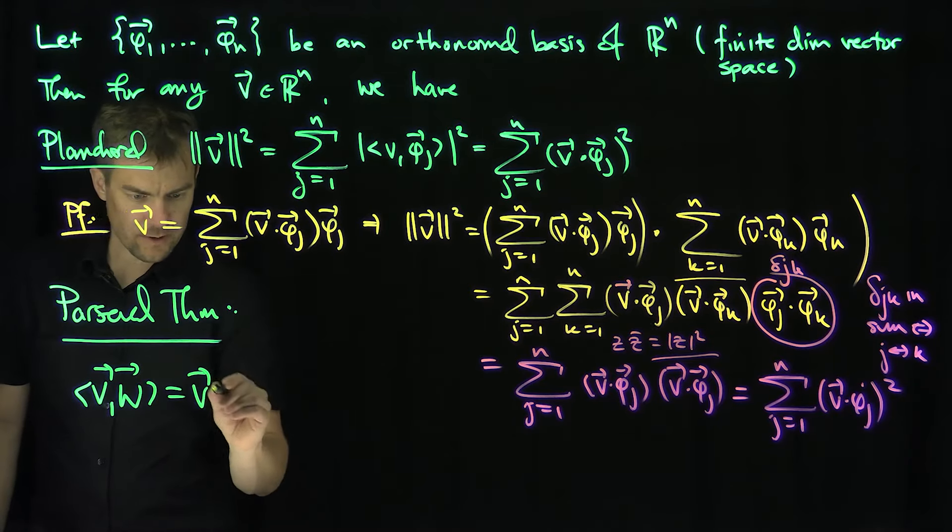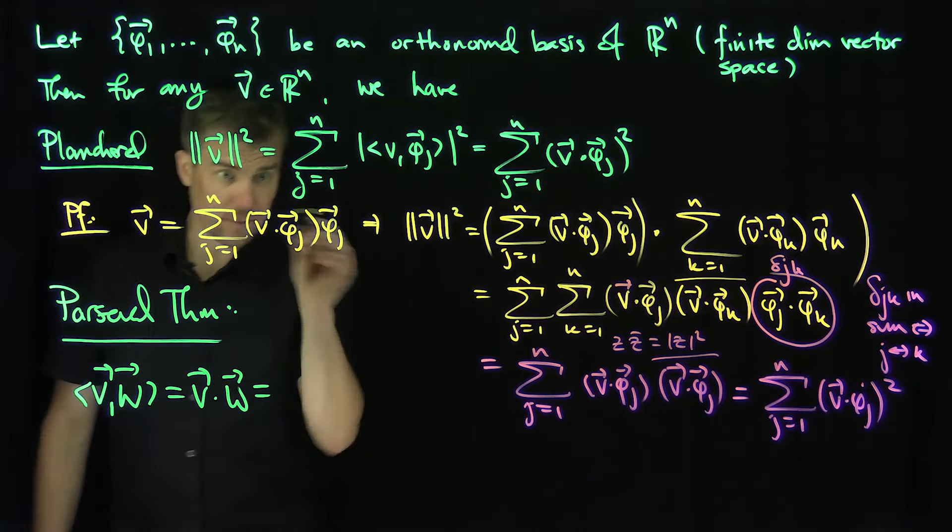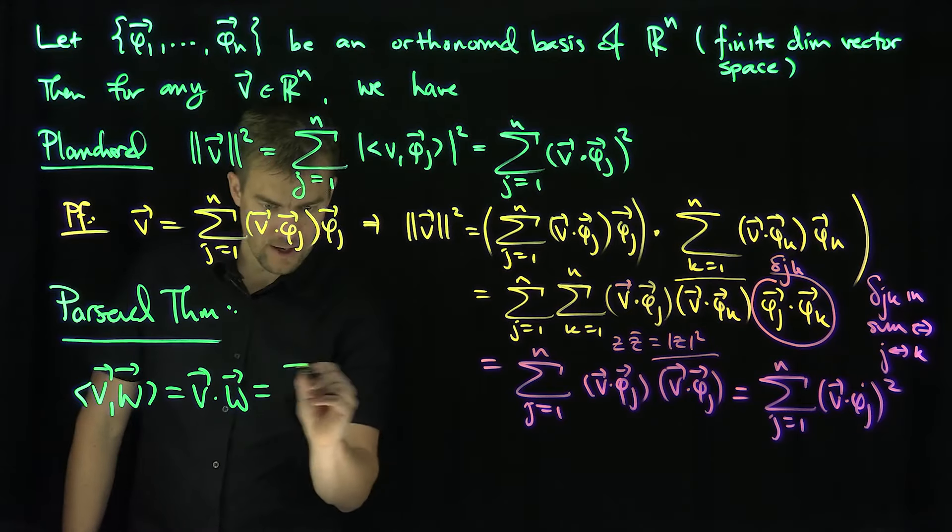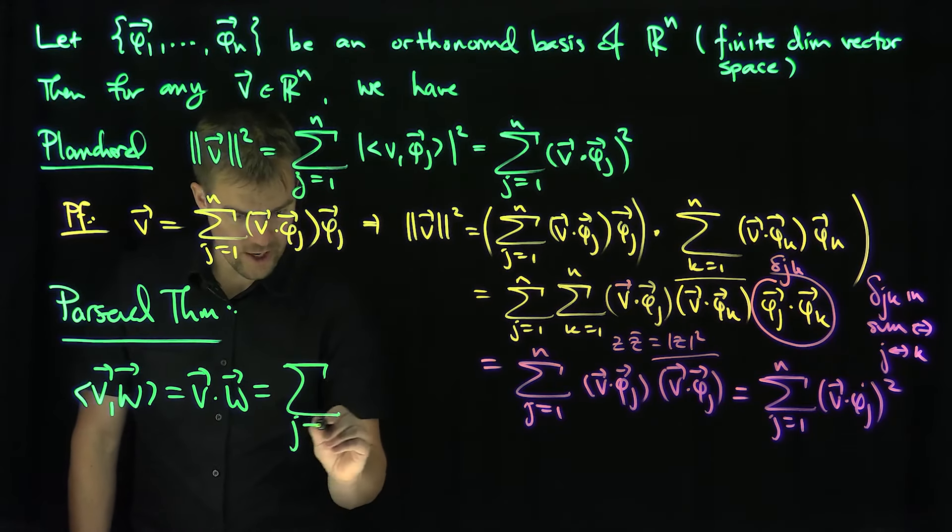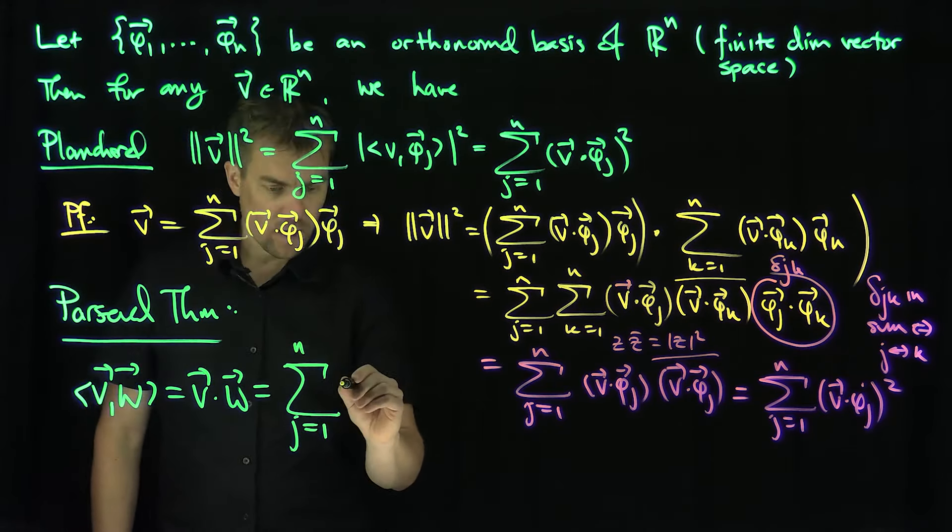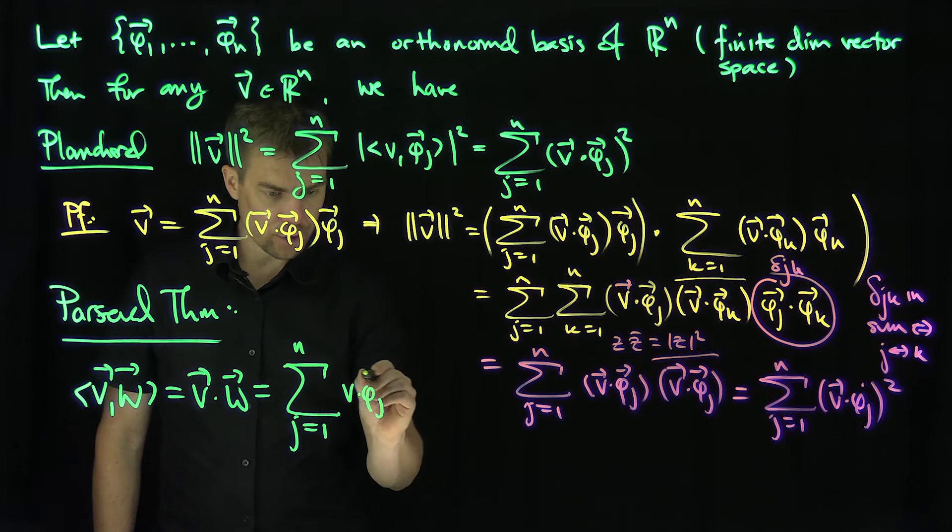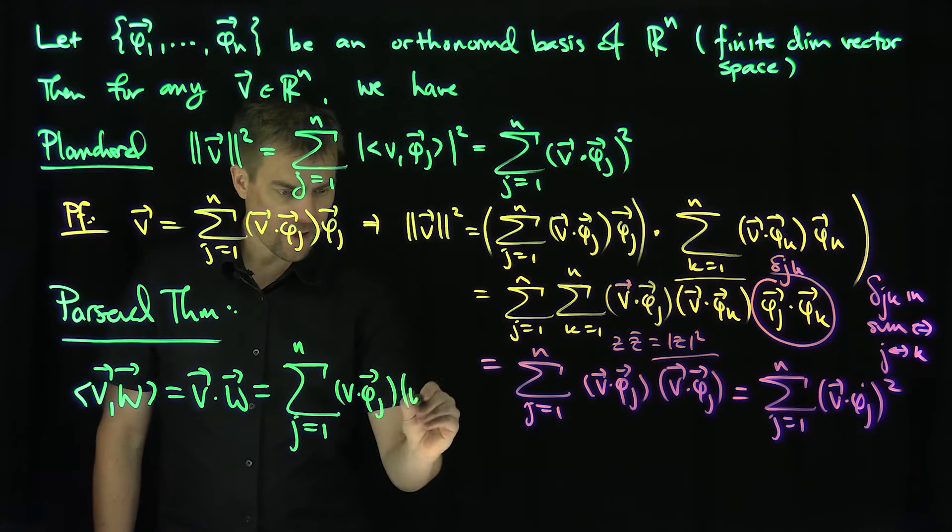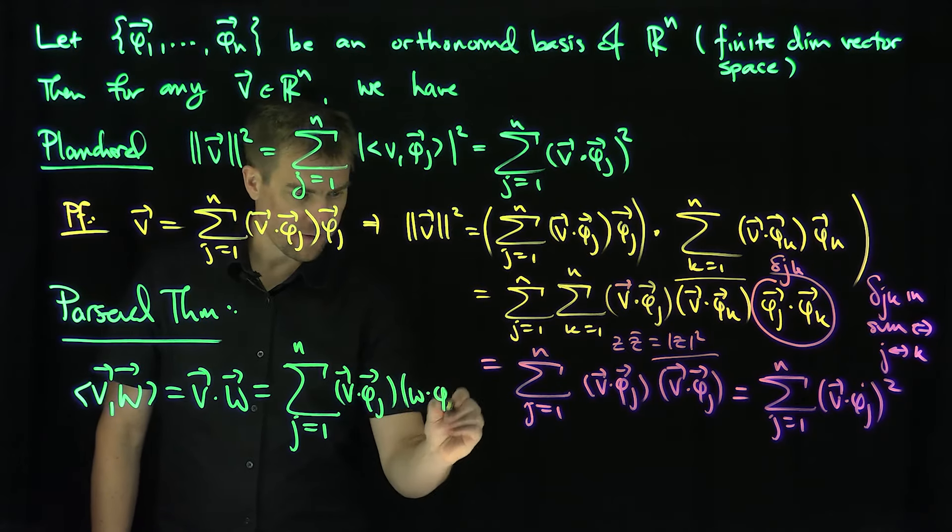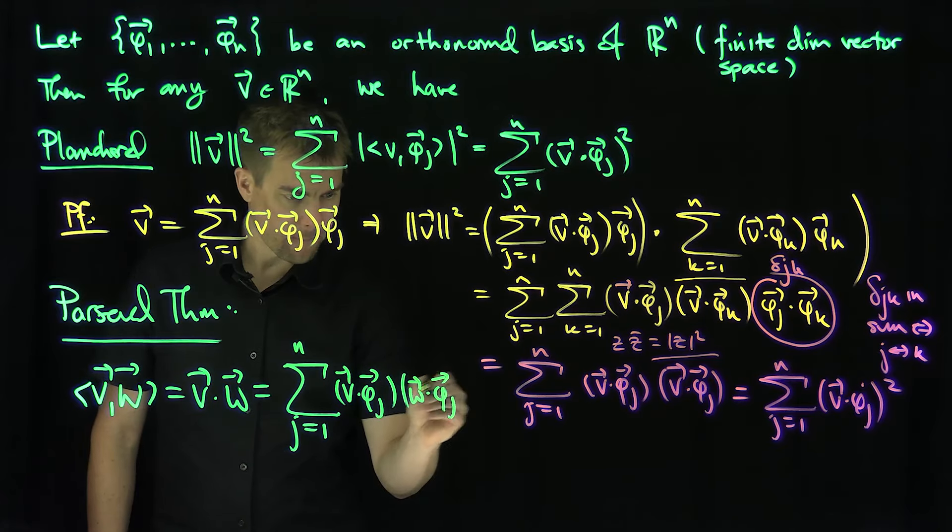By symmetrizing this and polarizing it, I'll give this as the sum j goes from 1 up to n of v dot phi_j times w dot phi_j.